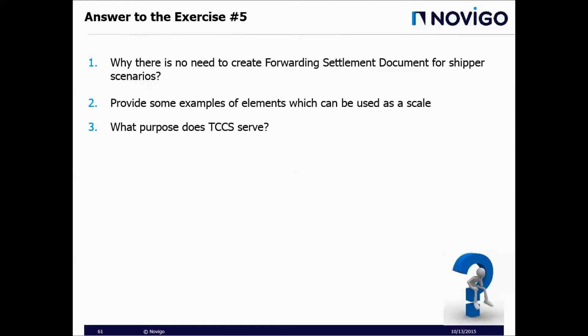I have prepared some exercises based on the lecture. Exercise number one: why is there no need to create a forwarding settlement document for shipper scenarios? Exercise number two: provide some examples of elements which can be used as a scale. Exercise number three: what purpose does the TCCS serve?